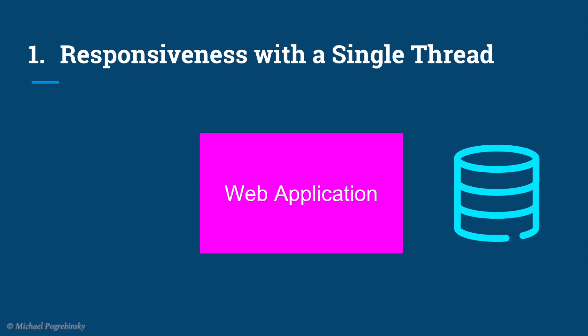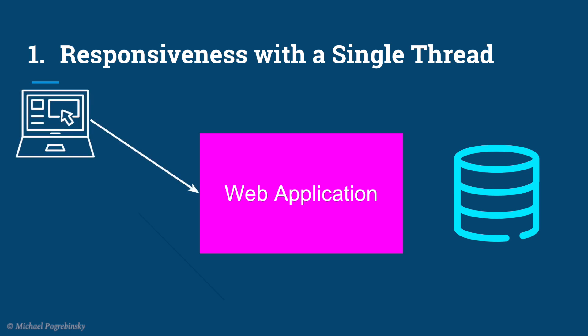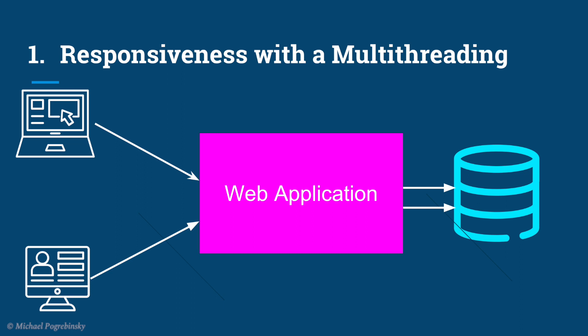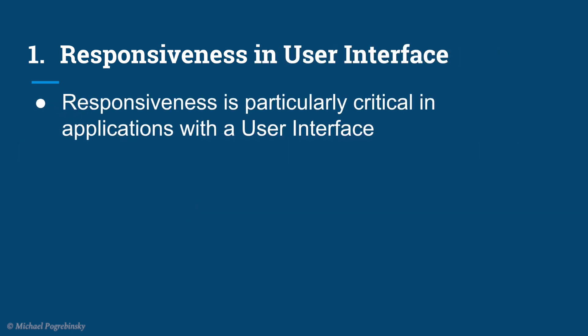Suppose we have an online store web application serving thousands of users. If one user makes a large purchase resulting in a long database operation, and at the same time another user needs to complete their purchase, that second user gets no response until the web app finishes the first request. With multi-threading, we can serve multiple users simultaneously by handling each request on a different thread.